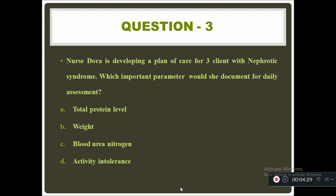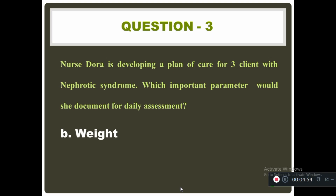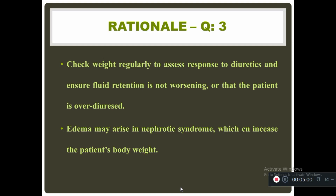Question three: nurse Dora is developing a plan of care for clients with nephrotic syndrome. Which important parameter would she document for daily assessment — total protein level, weight, blood urea nitrogen, or activity intolerance? The answer is weight. Patient weight should be monitored regularly to assess response to diuretics and ensure that fluid retention is not occurring, as sometimes the patient can also over-diurese. Edema may also present in nephrotic syndrome and increase body weight, so weight assessment is the top priority.